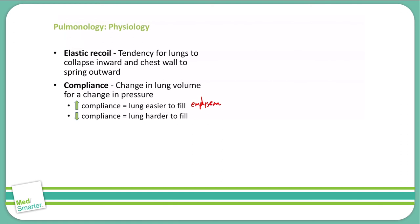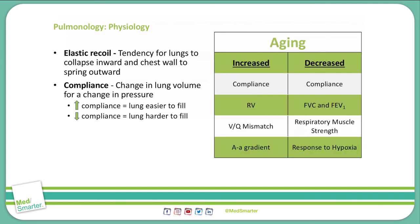Let's talk about what aging does to the respiratory tract. Aging increases lung compliance and also increases residual volume. We see an increase in VQ mismatch and an increase in the A-a gradient. Aging decreases compliance of the chest wall specifically, causing increased chest wall stiffness. We also see a decrease in functional vital capacity, FEV1, respiratory muscle strength, and the body's natural response to hypoxia.